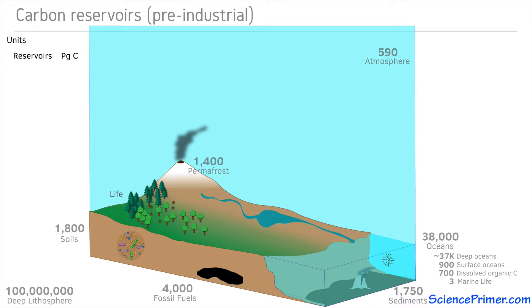The final major reservoir is the biosphere, which contains around 550 petagrams of carbon, roughly the same amount as was present in the atmosphere prior to the Industrial Revolution. While animals like us are included in this reservoir, it is dominated by plants and microorganisms.